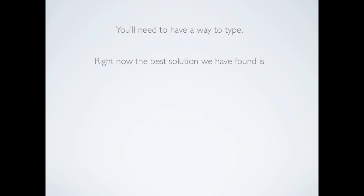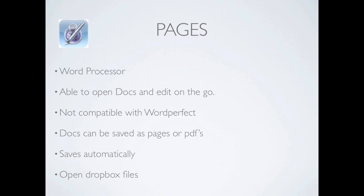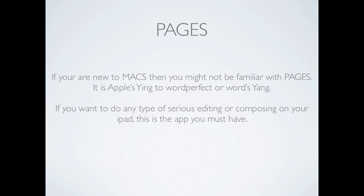Now, if you actually want to edit or create a document using a word processor, right now your best bet is going to be Pages. Pages was made by Mac — it's the word processor used on most Macs. It is not compatible with WordPerfect. Docs can be saved as Pages or PDFs, and they can be emailed or published. If you're new to Macs, you won't be familiar with Pages, but it is their version of Word and it works beautifully. If you can take the time to get used to it, you'll love it.